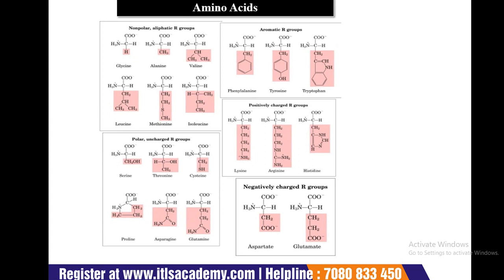For example, glycine is the amino acid known as optically inactive, and alanine is also known as alpha-amino propionic acid. All of the above are considered simple mono-amino monocarboxylic acids, and on the basis of their structure they are further classified.